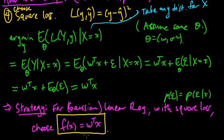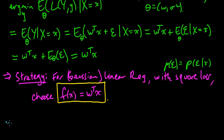But wait, there's still an issue. So, we want to choose this, but what's w? We don't know what w is.